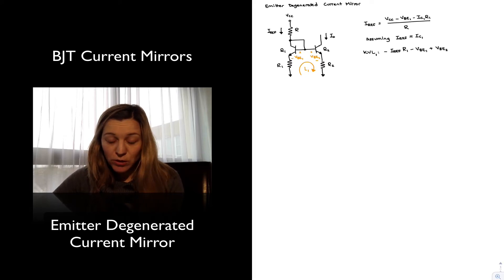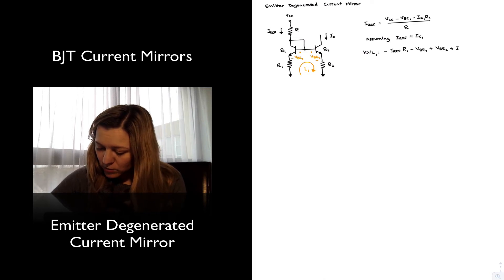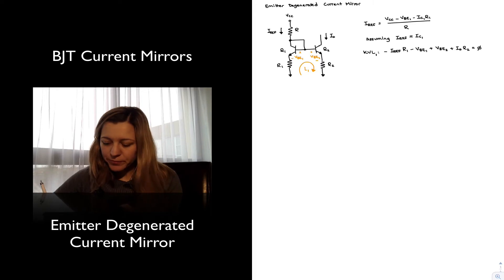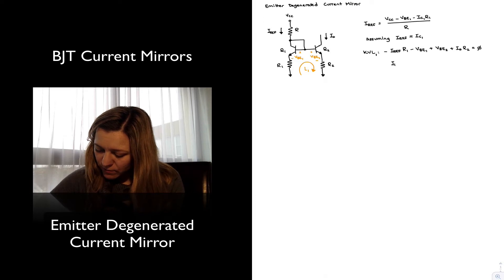Minus VBE1 plus VBE2, plus the voltage drop across R2, which is going to be I out R2, that's equal to 0.